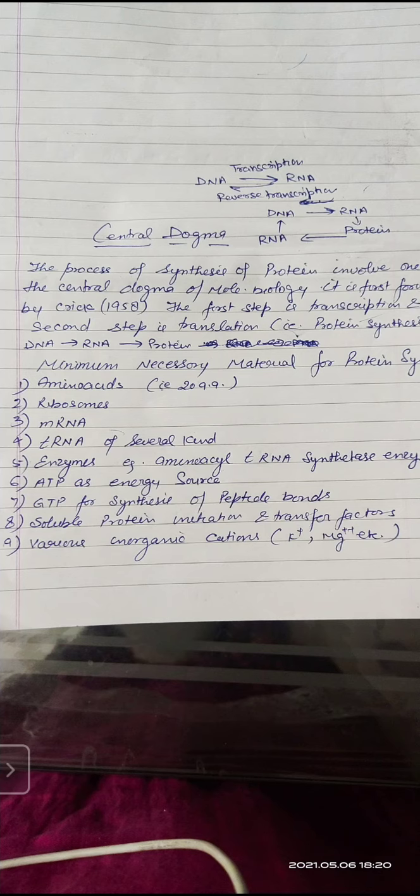In protein synthesis, there are some important events, such as amino acid activation and attachment to tRNA. Because in protein synthesis, the initiation involves amino acids being loaded onto tRNA. However, many amino acids present in the cytoplasm are in inactive states, which is addressed by the aminoacyl-tRNA synthetase enzyme.